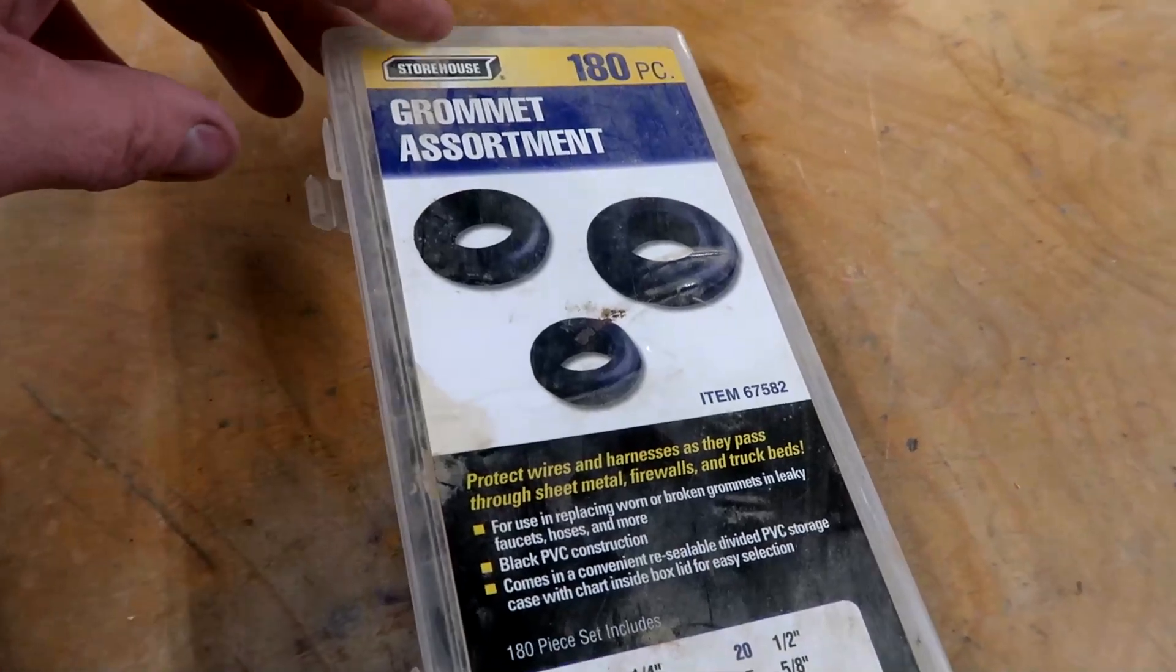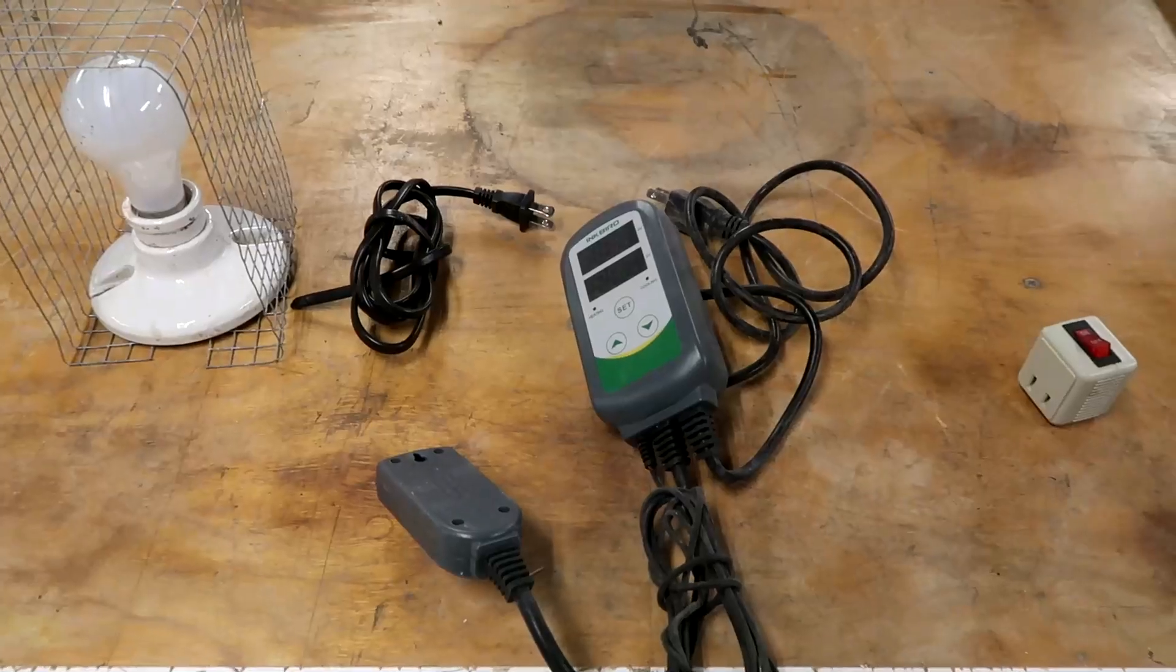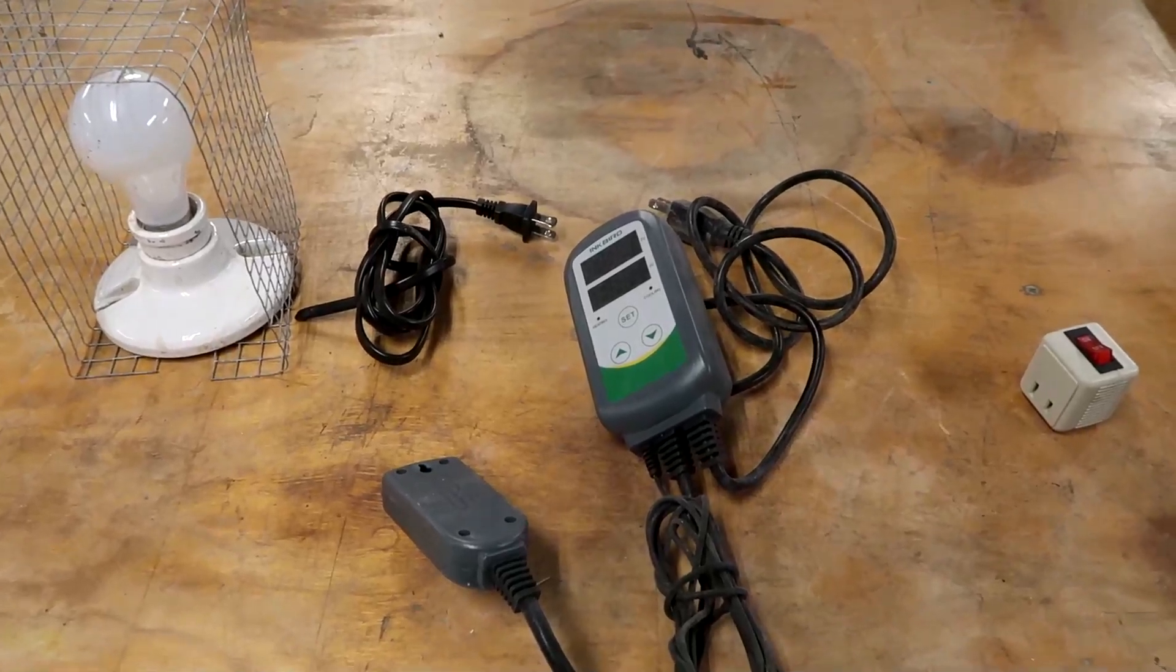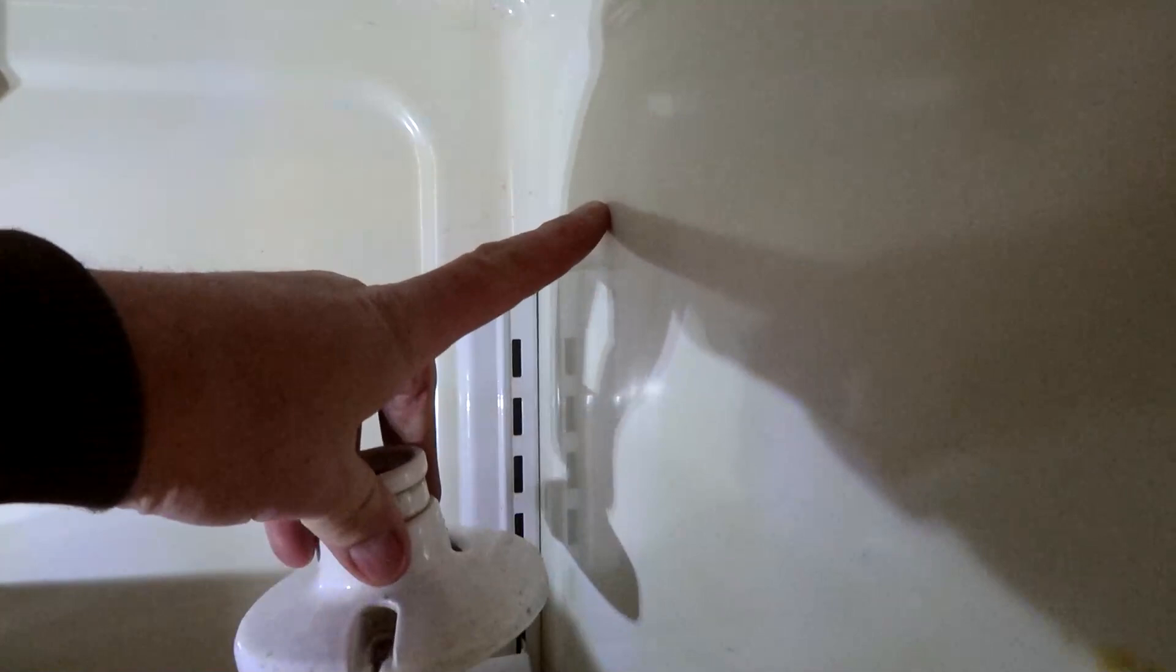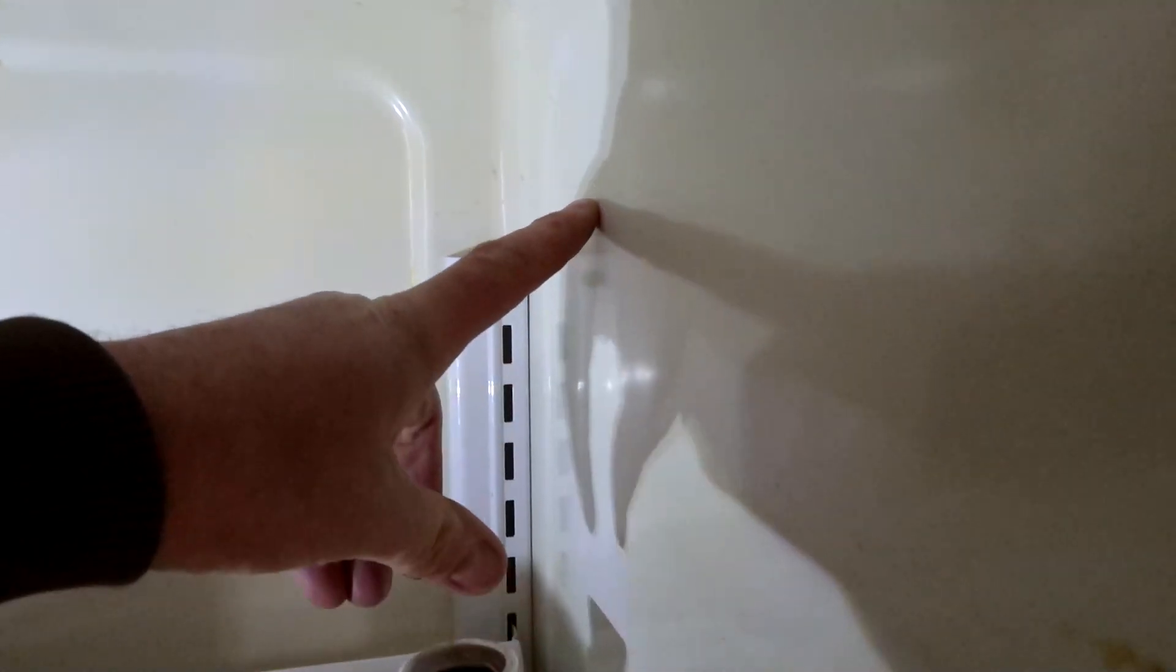I'm also going to use some grommets where I drill holes. I'm going to grab a drill, get some screws, put it all together. I'm going to put the light fixture in the back, in the corner, up in here. And in the center, I'm going to drill a hole.